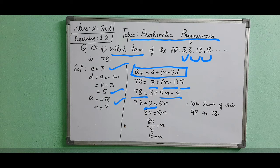Now this 5 is in multiplication. When we shift it, it comes to division. 80 divided by 5. Dividing 80 by 5, we get 16. So n equals 16.